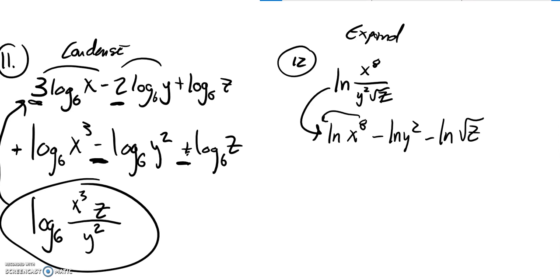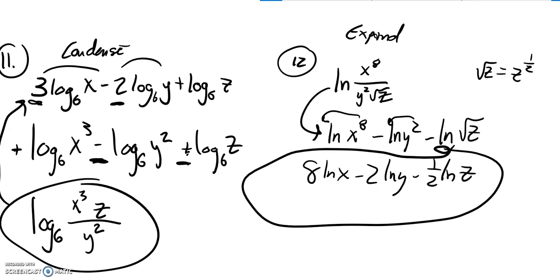Let me bring out those exponents now. So this is 8 natural log of x minus 2 natural log of y. Remember, 1 half is square root, 1 half power. So this is minus 1 half natural log of z. And there you go.